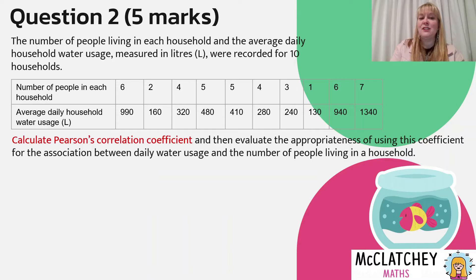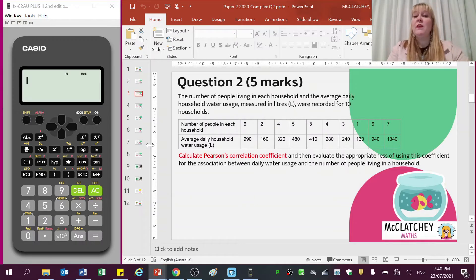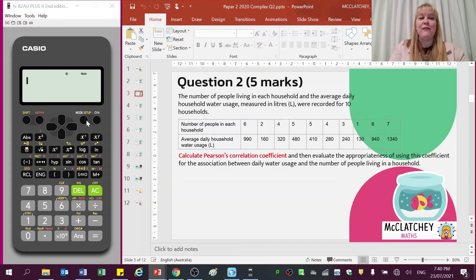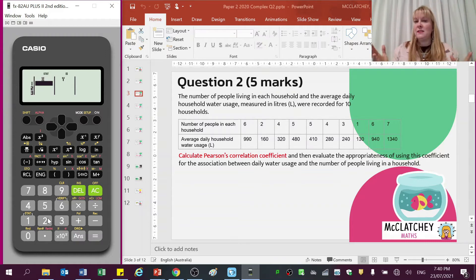Let's jump on and calculate Pearson's correlation coefficient using a Casio calculator. We need to get it set up for bivariate data. The first thing I'm going to do is click on Mode and choose number two for Statistics, then select option two — a plus bx — which tells it I'm going to be working out the equation of the line. I need to do this in order to calculate R on my calculator.